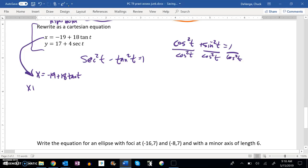Add 19 to both sides, then divide by 18. So tangent equals x plus 19 over 18.